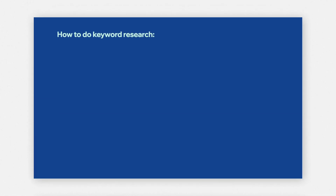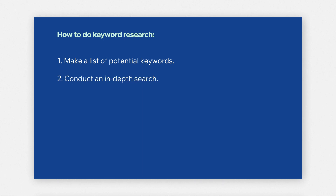So, how do you do keyword research? There are a few steps involved. First, make a list of potential keywords that you want to use. Then take that list and conduct an in-depth search. After doing your research, fine-tune your keywords and whittle down your list. And then put them to use by adding them to your pages.